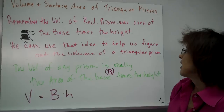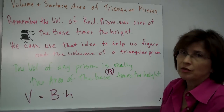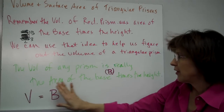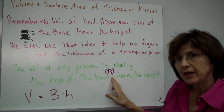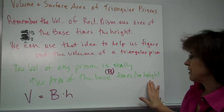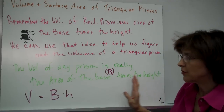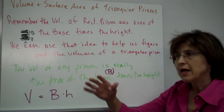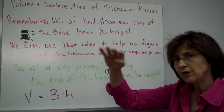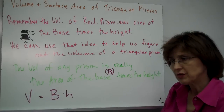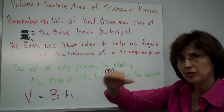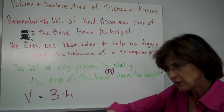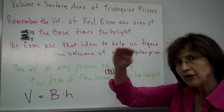We can use that idea to help us figure out the volume of a triangular prism. The volume of any prism is really the area of the base — we call it big B, capital B — times the height of that base. The prism goes up and down straight, and the two bases are parallel and congruent. All you have to do is fill it up layer by layer, which is the area of the base times how high you have to go.